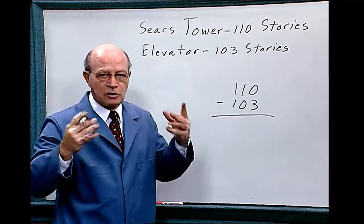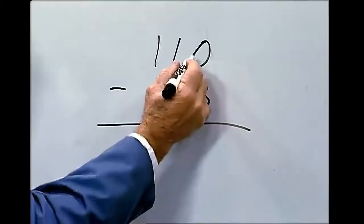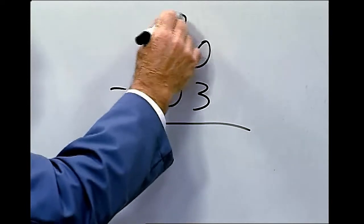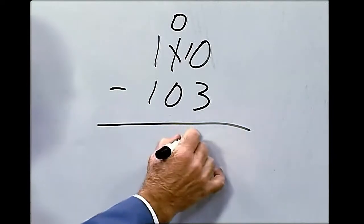Now I know you could probably do this in your head, but we're going to show you to do this on the board here. We can't take three from the zero, so you have to borrow from the tens column. This becomes a zero. Now we can deduct 10 minus three equals seven.